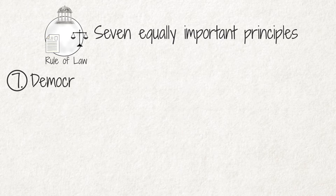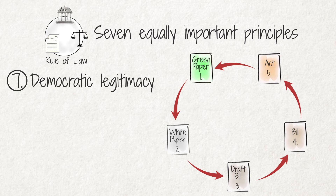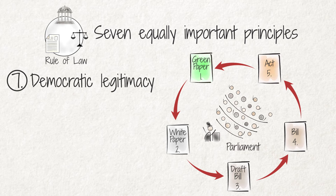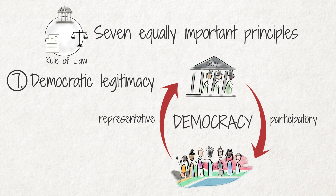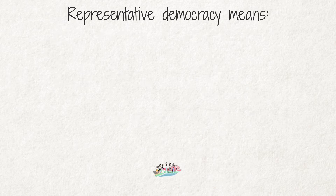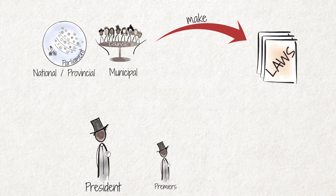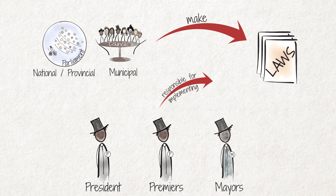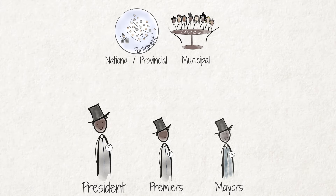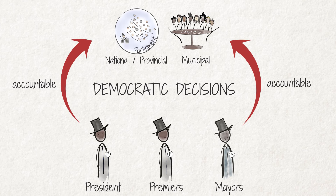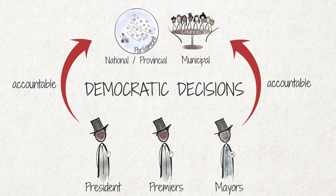Principle 7 has to do with how laws are made in a democracy. Laws must be made through clear and transparent procedures and by bodies that have democratic legitimacy. In South Africa, we have a representative and participatory democracy. Representative democracy means that we elect representatives to our national and provincial parliaments and to our municipal councils to represent our interests and govern on our behalf. They may make laws that apply to us and they choose a president, premiers and mayors from amongst themselves who are responsible for implementing these laws. Importantly, the president, premiers and mayors are accountable to the elected legislature. This ensures that their decisions are ultimately democratic.